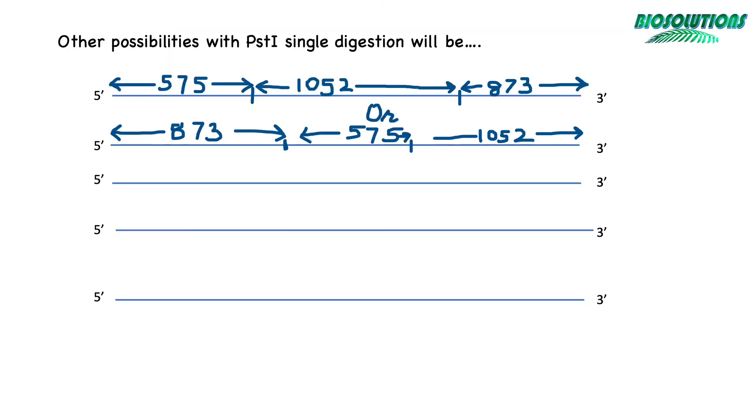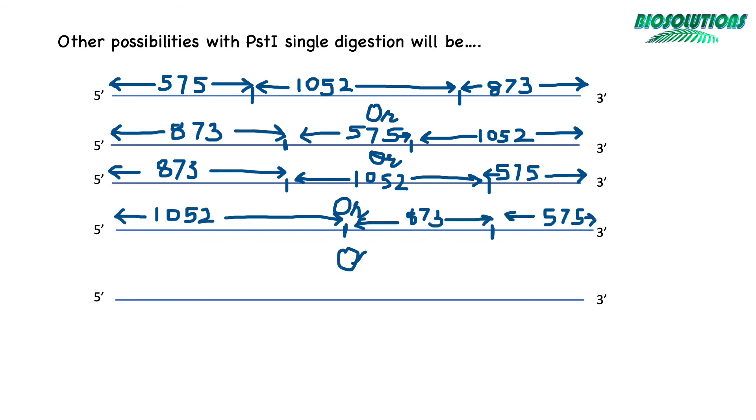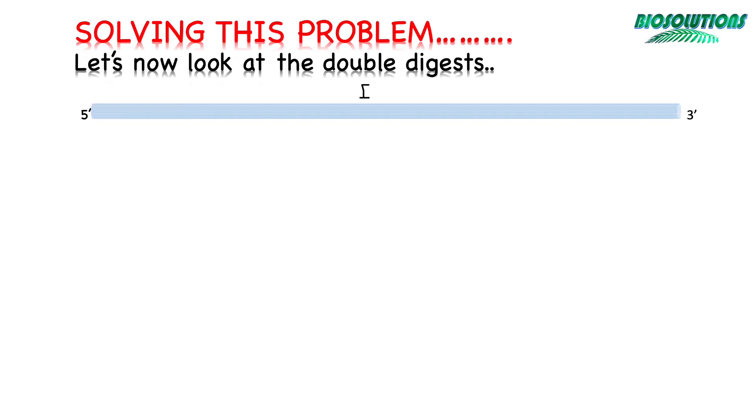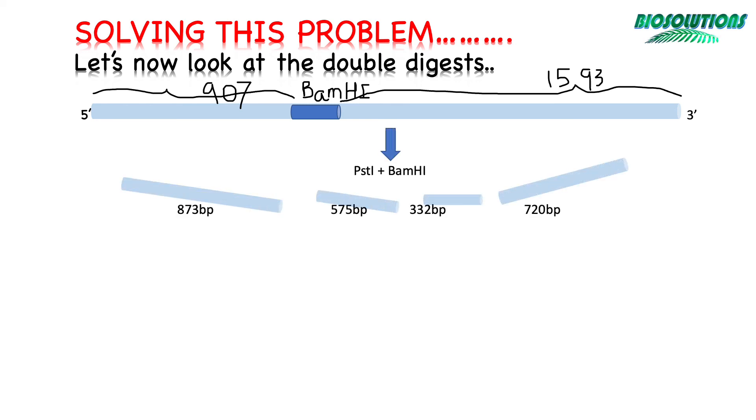Now for double digestion with BamHI and PstI, first place BamHI in any one direction as it is easier to place this with just one cut. Now we try to place PstI such that not only we place the cuts on desired locations but also obtain the double digestion fragment sizes. If we carefully examine, then the total of 575 and 332 in digestion is 907 base pairs, hence we place a PstI site there. Similarly, place another PstI site on the other side of the BamHI.